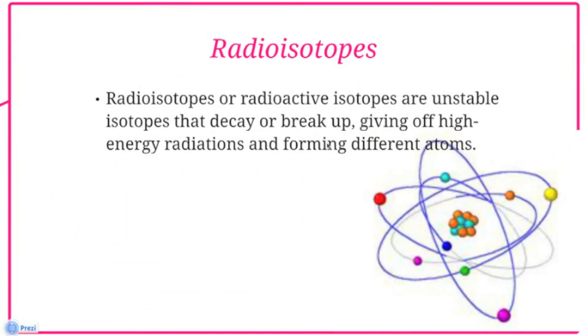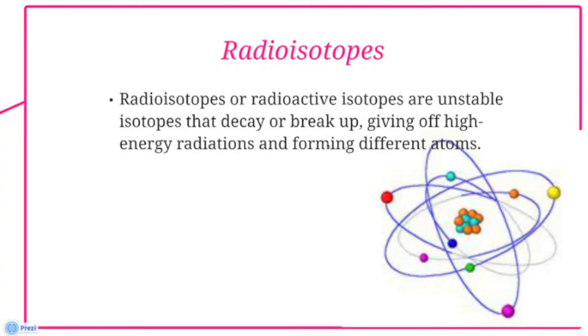Hi, today I'll be talking about Cobalt-60. Radioisotopes are unstable isotopes that decay or break up, giving off high energy radiations and forming different atoms.